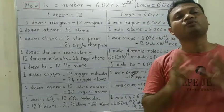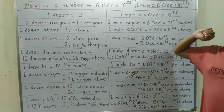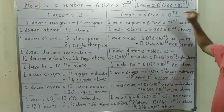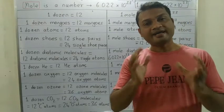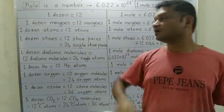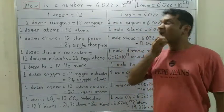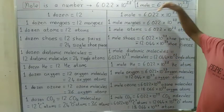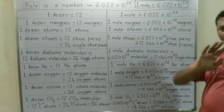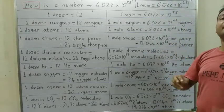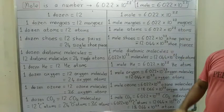We have to remember this value: 1 mole is equal to 6.022 into 10 raise to 23. Now, if I ask you — ek dozen mangos, to kitne aam hongi? Of course, 12 mangos. Ek dozen aam = 12 aam. Ek mole aam to kitne aam hongi? 6.022 into 10 raise to 23 aam. It is a big number, but one mole mangos will be this number of mangos.